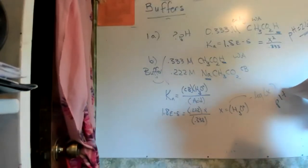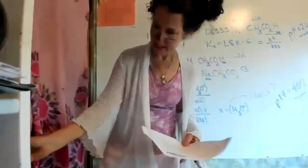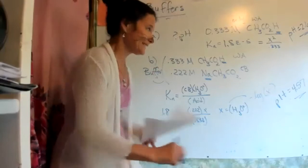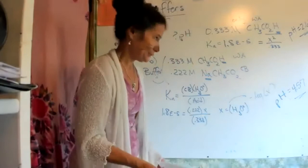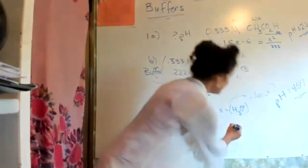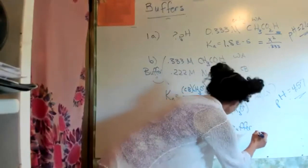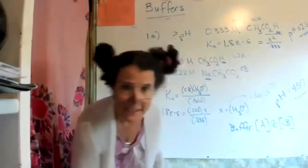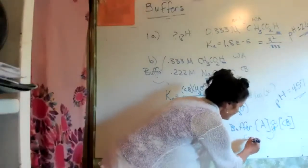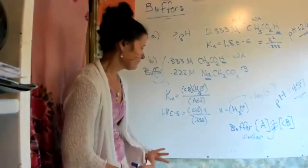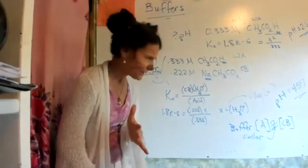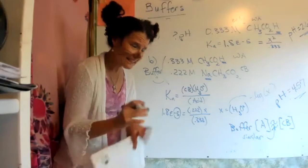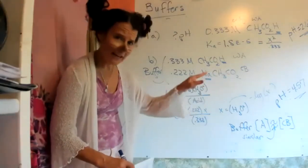Does the answer make sense? Yes. With a buffer, the concentration of the acid is going to be roughly similar to the concentration of the conjugate base. Because they're similar, the Ka is going to be roughly around your hydronium. So if you look at the exponent, that's where your pH will be in that range. We got a pH somewhere near 5, and we did — which is great.